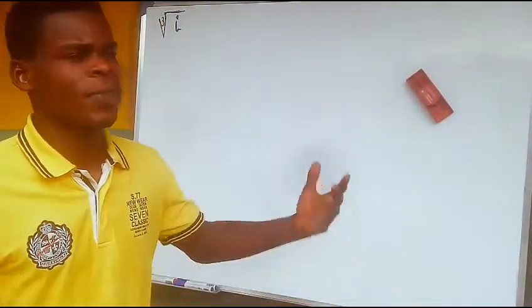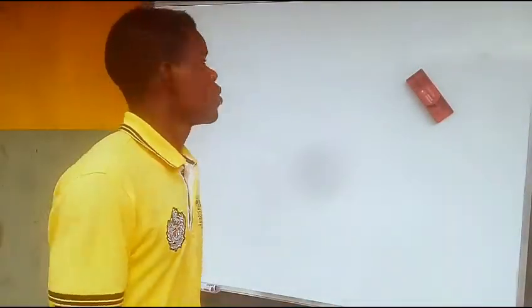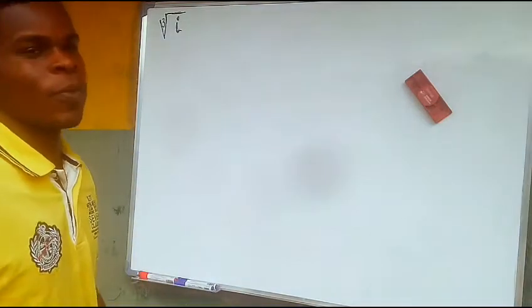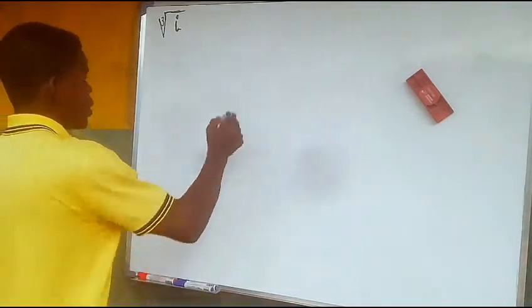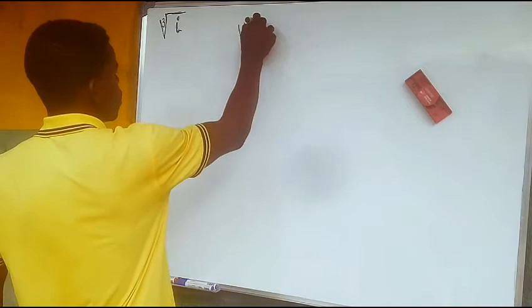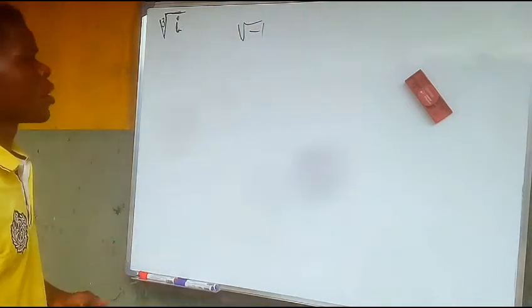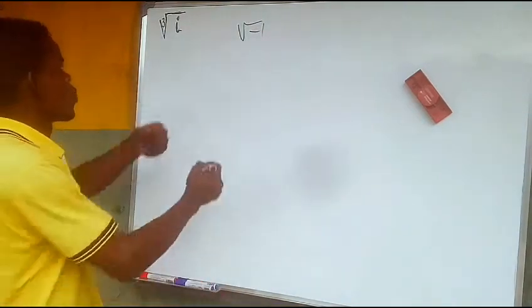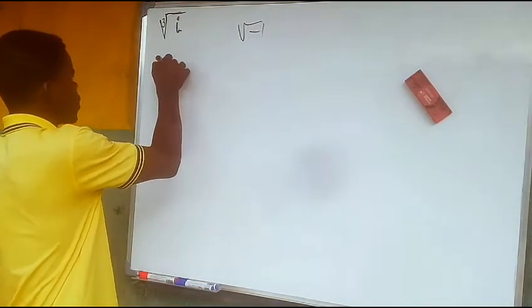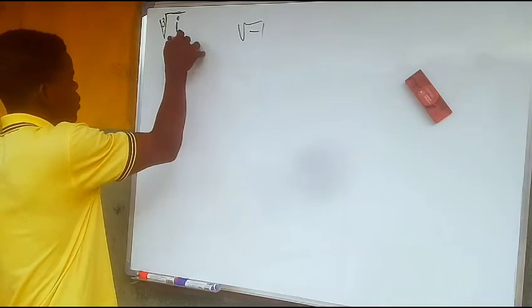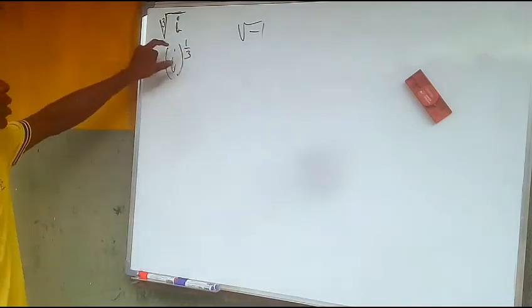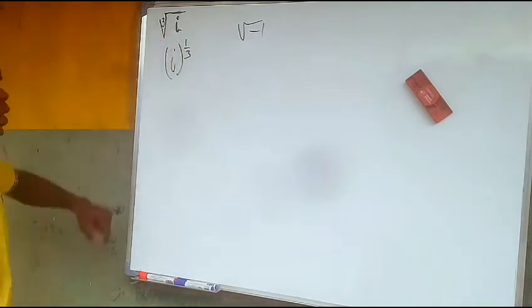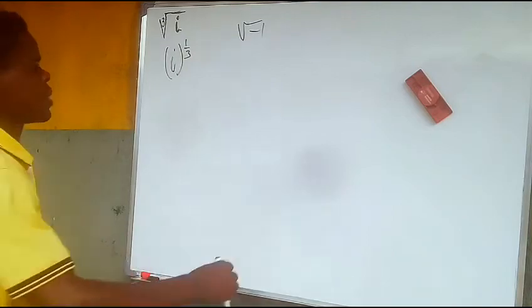Hello and welcome to this video. In this video we are going to solve for the cube root of iota, where iota is said to be the square root of negative one. So what's the cube root of iota? We raise it to the one-third power — what's the one-third power of iota?